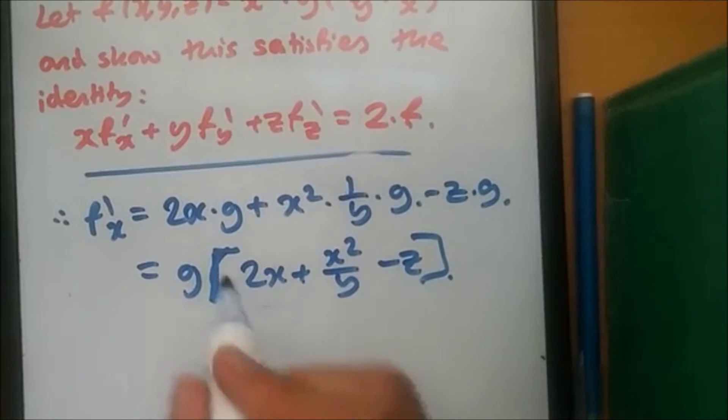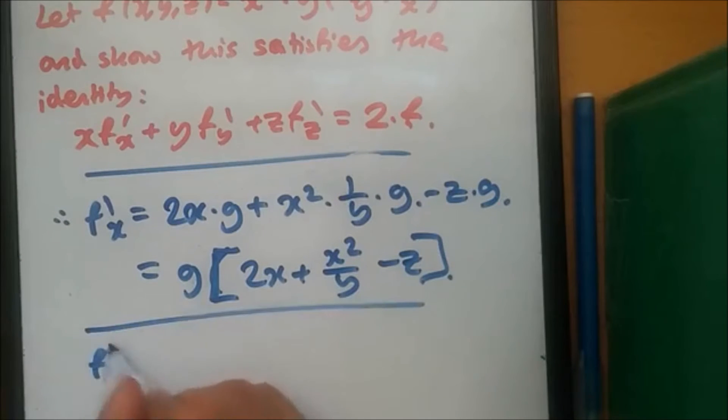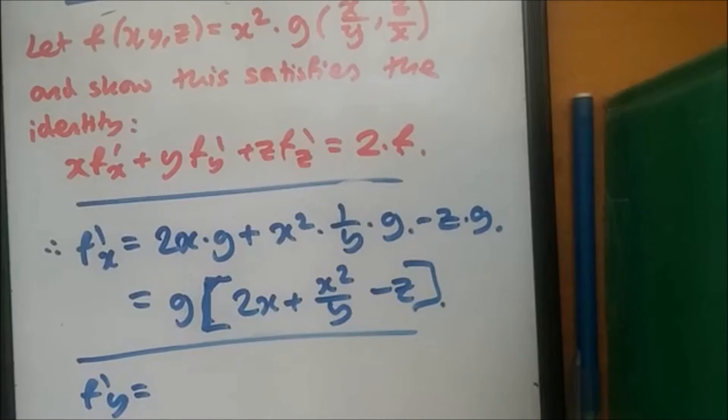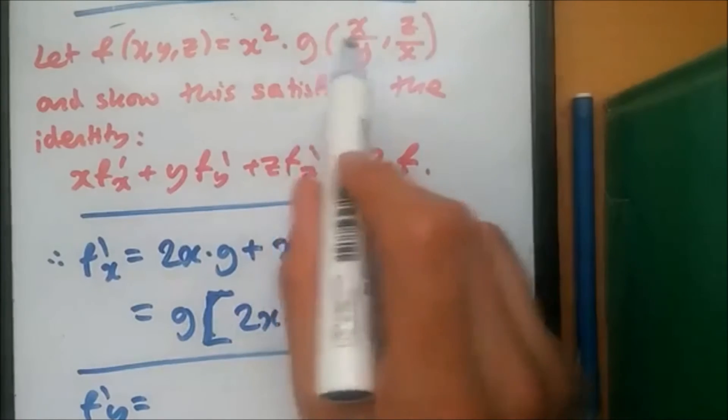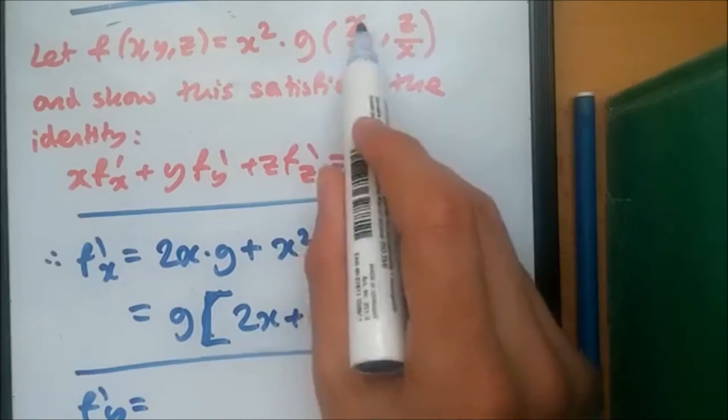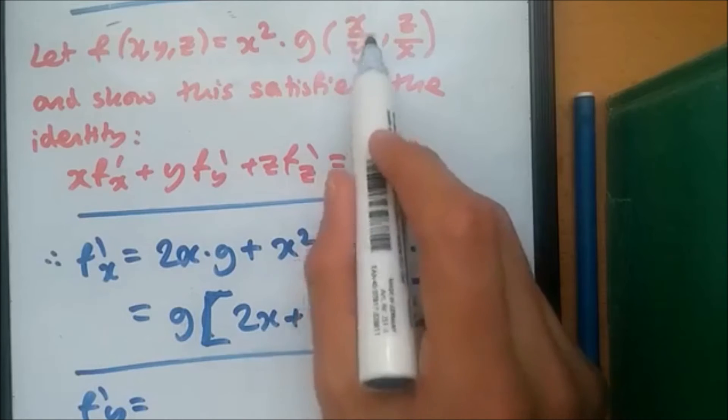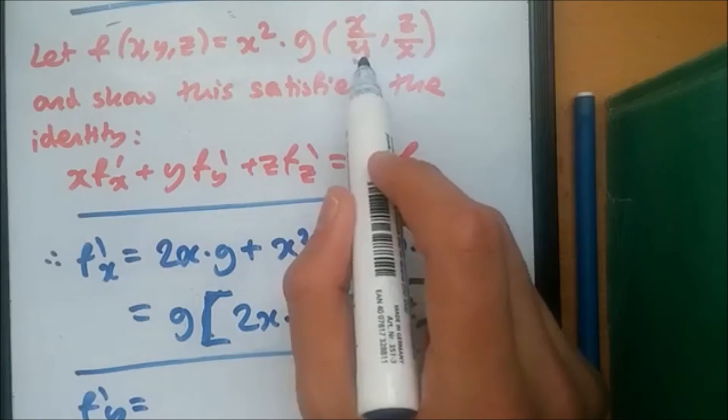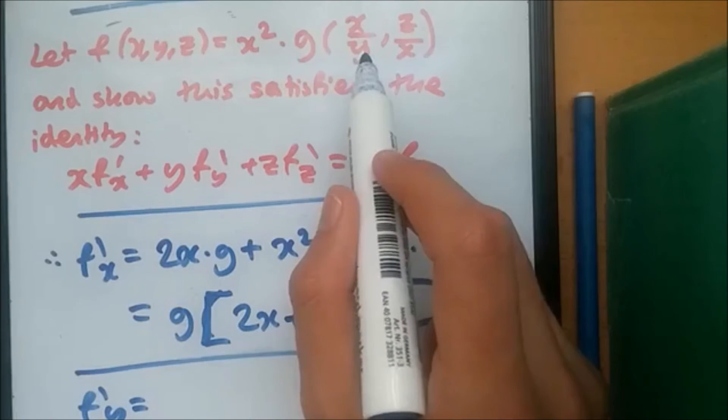So let's do the derivative of f dash y. So do the same technique. So now looking at the function here, taking the, since x squared is a constant, we need to do derivative once. So derivative of x over y, where x is a constant. So derivative of 1 over y is just minus 1 over y squared.